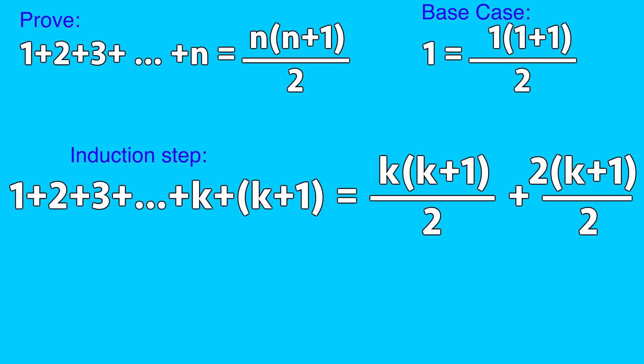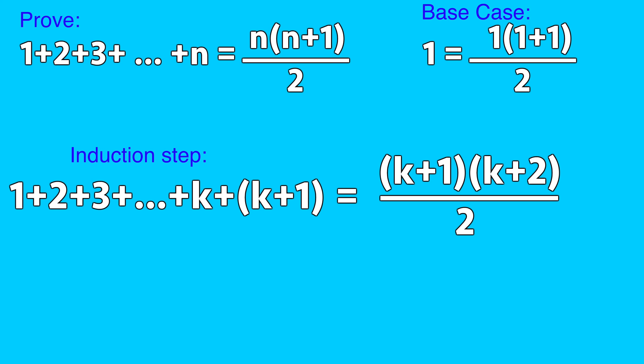First we'll make the last term have a denominator of 2. Let's group both terms together. In this final step we arrange it so that it has the same form as the formula n times n plus 1 divided by 2.